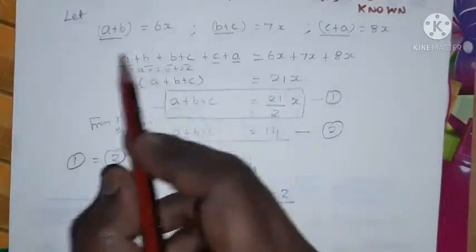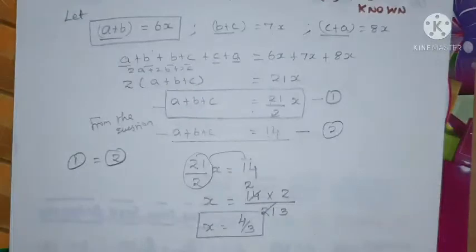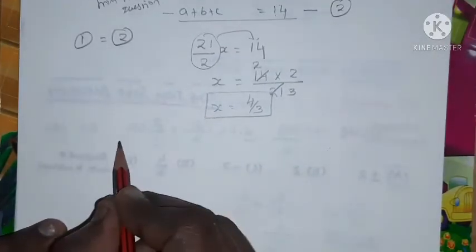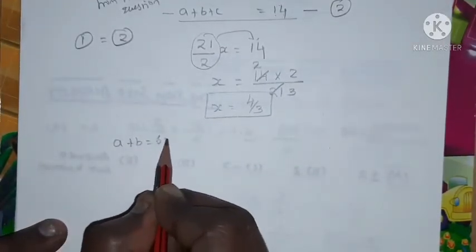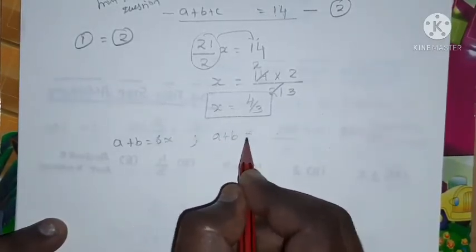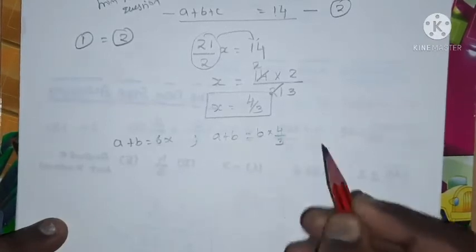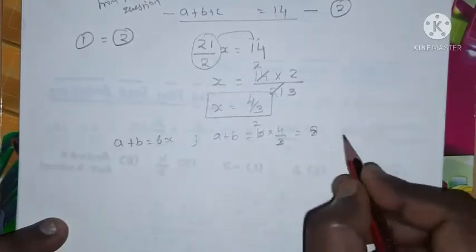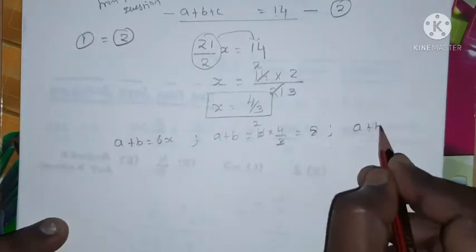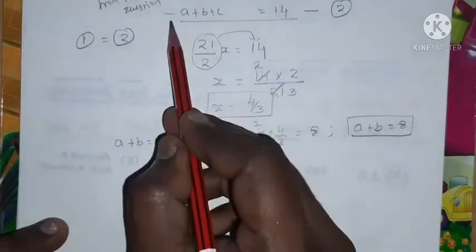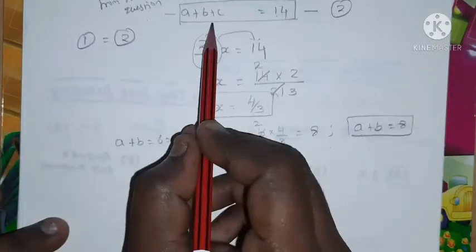Pick any equation and substitute the value of x. I've taken a+b = 6x, so a+b = 6 × (4/3). Since 6/3 = 2 and 2 × 4 = 8, we get a+b = 8.